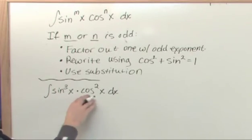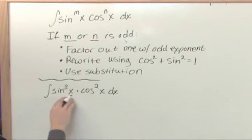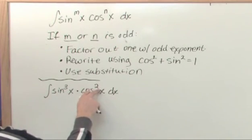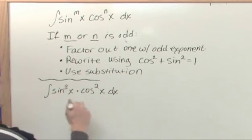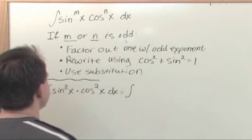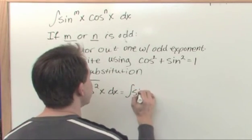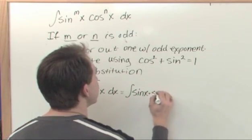What you want to do is you want to beat this thing into a shape so that you can do some sort of substitution on it and get it to cancel. So using our cookie cutter thing, which is sort of a first place to start, this is m and this is n. This is odd. So I'm going to rewrite this integral as sine of x times sine of x times sine of x.